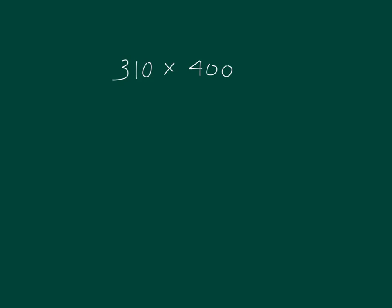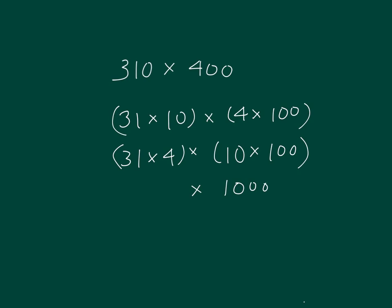Here's another problem to solve. This breaks down into 310 times 400. Grouping together, 31 times 4 times 10 times 100. 10 times 100 is 1,000. 31 times 4 is 124, so I have 124,000 as my answer.